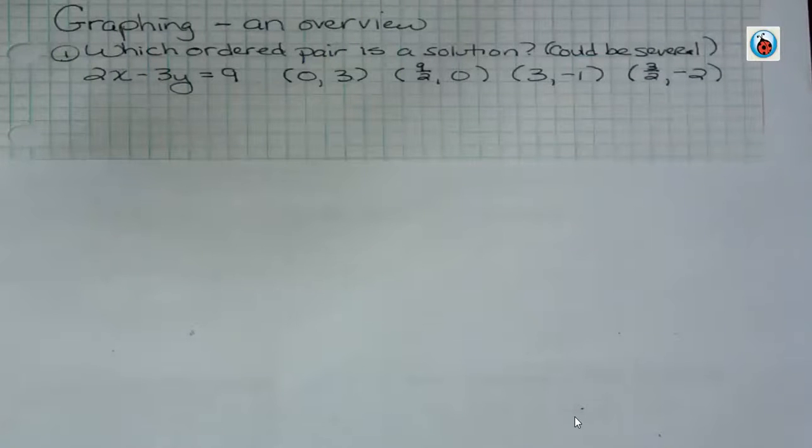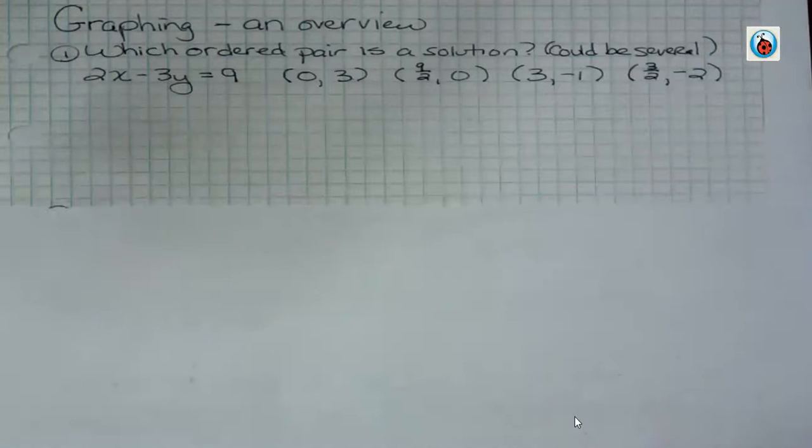One of the things that says is which ordered pair is a solution. This is one type of problem you can encounter. When it says which ordered pair or pairs is a solution, it could be several or all of them might be solutions. When you want to know if something is a solution, you plug in the values that you're given.